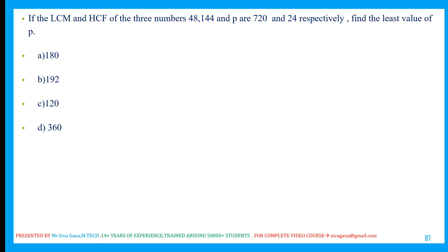Wherever you go, our network follows. In the similar manner, LCM, HCF, time and work — without these topics there is no placement paper. So that's the importance. The question: LCM and HCF of three numbers 48, 144 and P are 720 and 24 respectively. Find the least value of P.